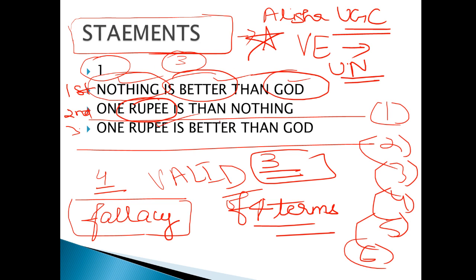So this becomes wrong. Now understand this — 'nothing is better than God' and 'one rupee is nothing,' therefore 'one rupee is better than God.' Here 'nothing' is ambiguous — it is used in two different senses. The correct conclusion should be 'one rupee is better than nothing.' So I hope guys you are clear with this. Coming to the next point.